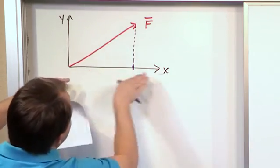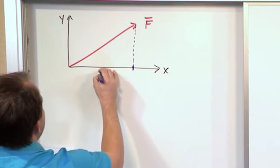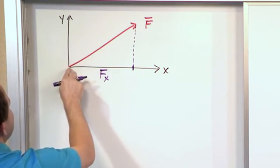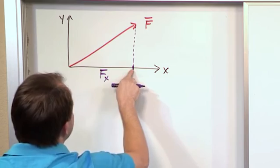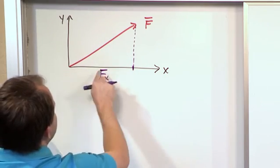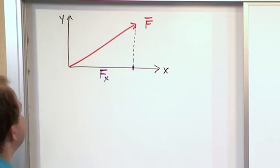It's only how much of the vector lies along x. So we call that F sub x, and that means the distance from here to here represents how much of this vector lies along the x direction.